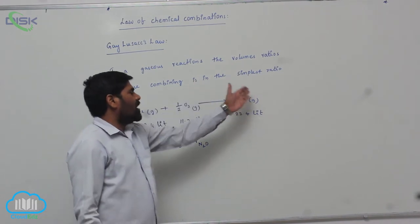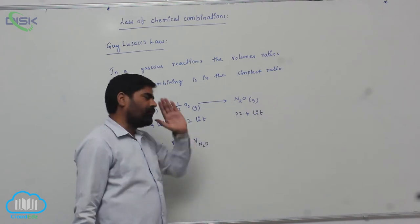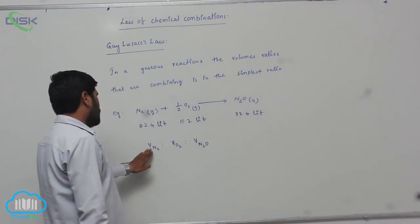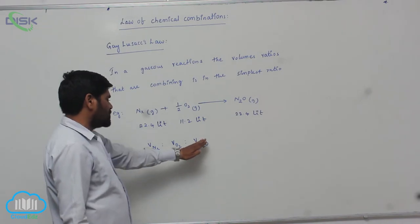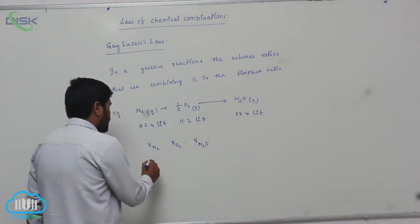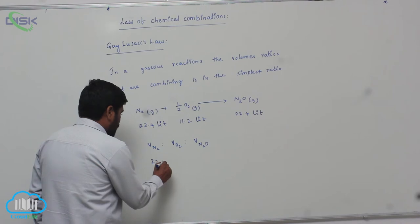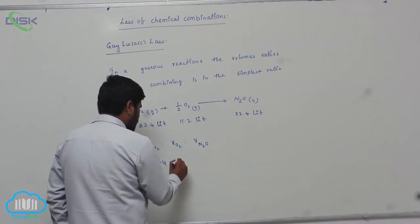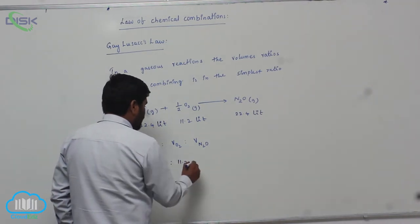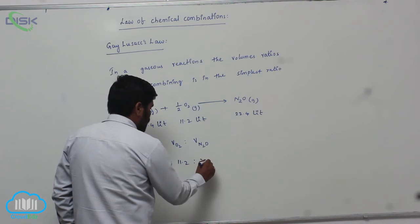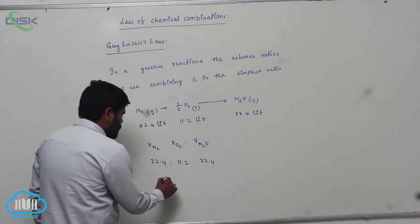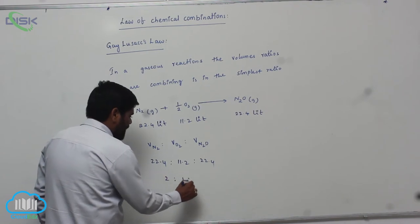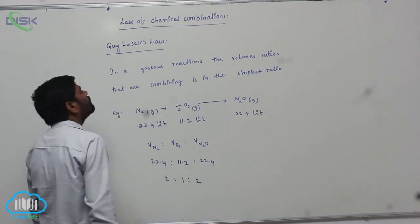Now, it is also one mole occupies 22.4 liters. Therefore, volume of N2 is 22.4, volume of O2 is 11.2, volume of N2O is 22.4. Therefore it becomes 2 is to 1 is to 2.